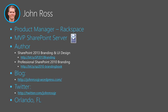My name is John Ross. I'm a product manager at Rackspace. Rackspace and Microsoft are good friends — we do all things including SharePoint Online and Office 365, which is one of my areas as product manager. I'm an MVP for SharePoint Server and have written a few books, including one on 2013 branding. We were giving them away earlier in the week, so if you're interested come find us in the expo hall.